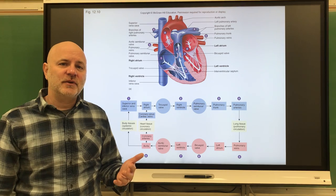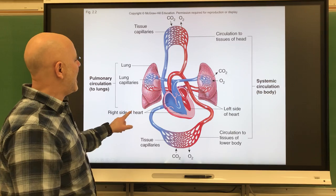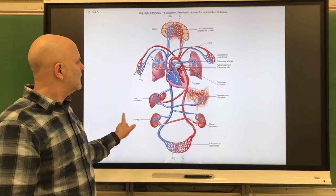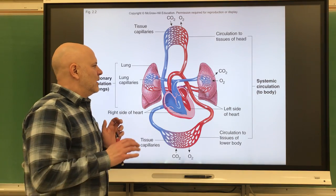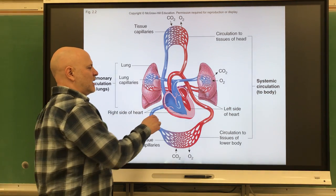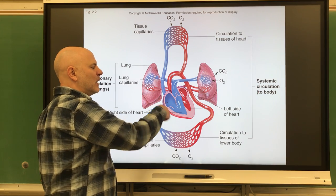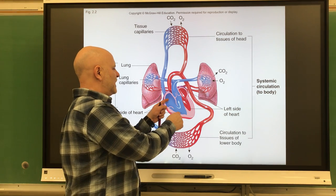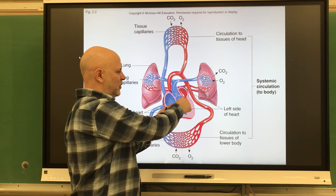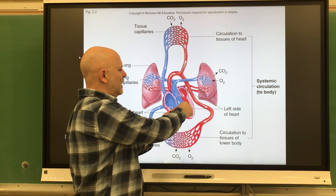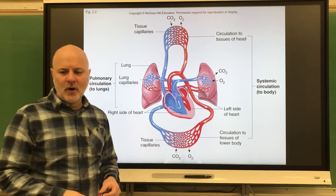Our average heart rate is about 70 to 75 beats a minute, with a typical range of 60 to 100 beats per minute. Now let's take a look at the pathway of blood. Blood is going to enter the right atrium and the left atrium at the same time, be pushed down through the ventricles at the same time, and then pushed up and out of the ventricles at the same time.